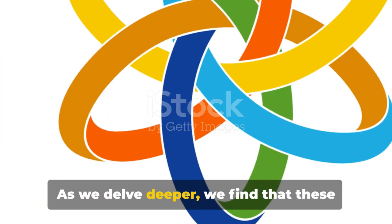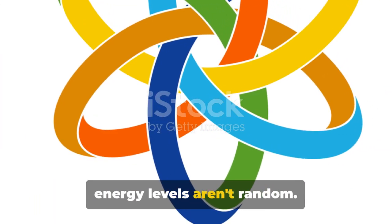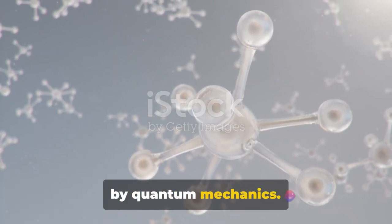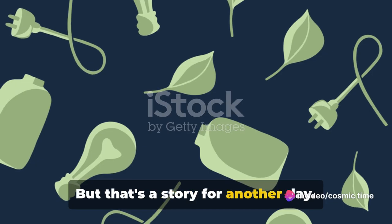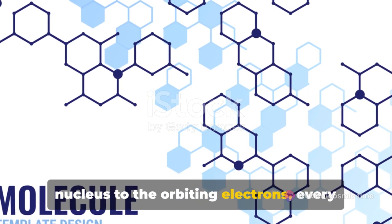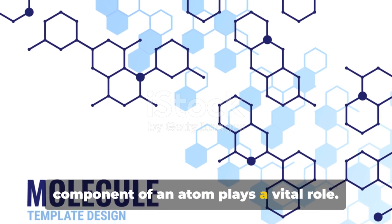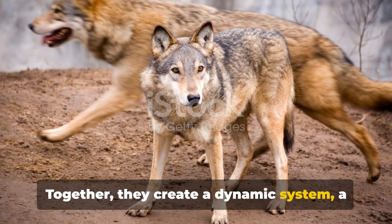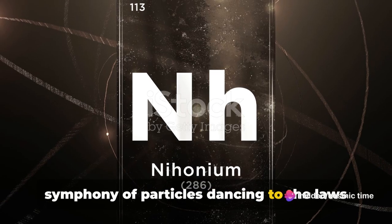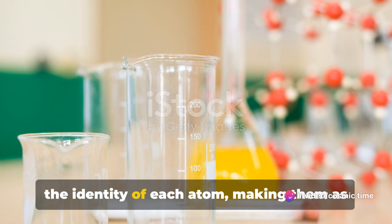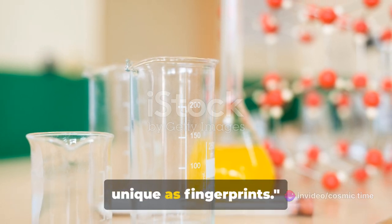As we delve deeper, we find that these energy levels aren't random. They follow a specific pattern, described by quantum mechanics. But that's a story for another day. From protons and neutrons in the nucleus, to the orbiting electrons, every component of an atom plays a vital role. Together, they create a dynamic system, a symphony of particles dancing to the laws of physics. The balance of these particles determines the identity of each atom, making them as unique as fingerprints.